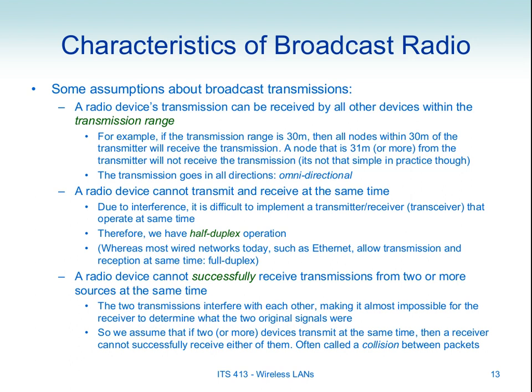In wired networks, full-duplex is common and easy to achieve because a LAN cable contains multiple wire pairs — we transmit on one pair and receive on another. Full-duplex can effectively double network performance. We cannot easily do that with wireless, so wireless devices remain half-duplex.